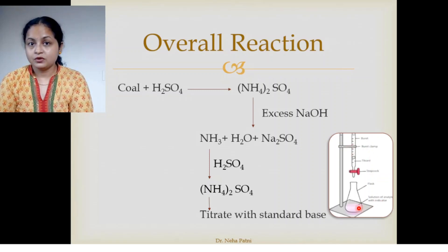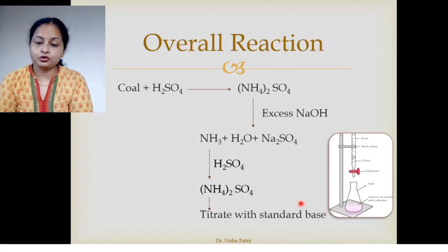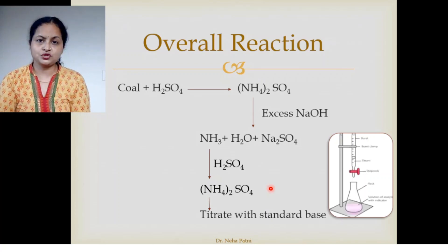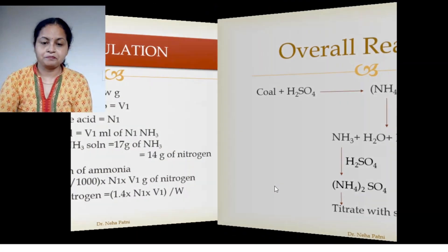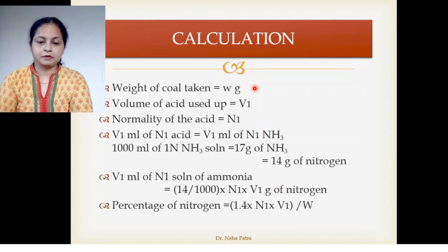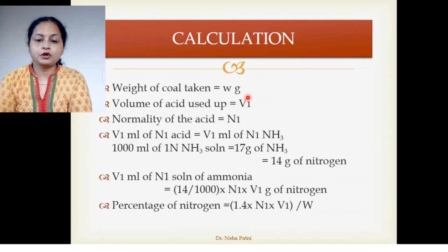That means 2 ml of NaOH neutralized the leftover H₂SO₄. So out of the 10 ml taken, 10 minus 2 gives 8 ml. That means 8 ml of H₂SO₄ was utilized in absorbing NH₃. From this volume we can determine how much H₂SO₄ was consumed in absorbing NH₃. We denote the volume used up as V₁ = 10 − 2 = 8 ml (total H₂SO₄ minus the leftover amount determined by titration).